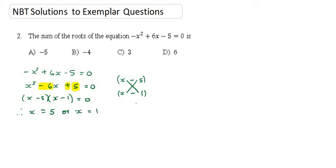And so have we answered the question? Well not yet. It says the sum of the roots. So we've got one of the roots is 5, one of the roots is 1. All we've got to do is 5 plus the 1. So what is our final answer there?